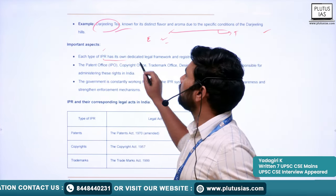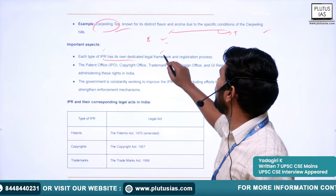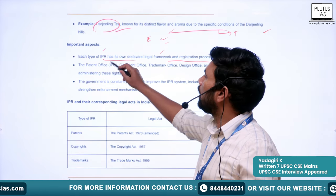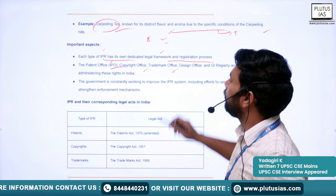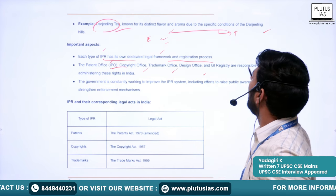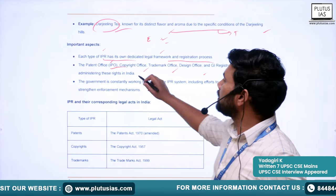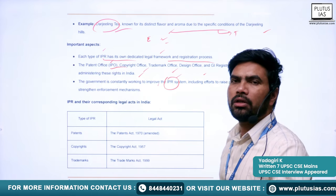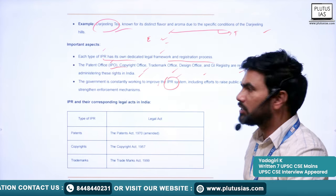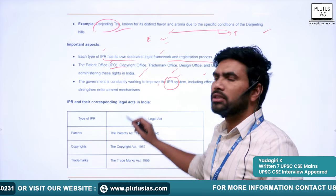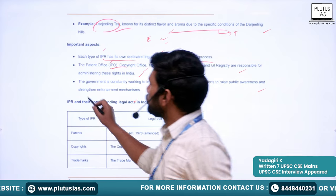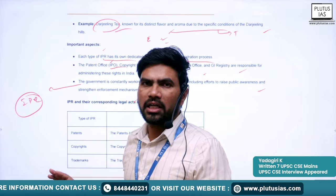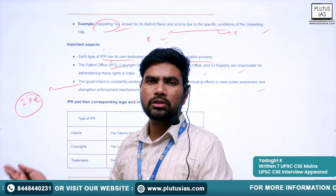Each type of IPR has its own dedicated legal framework and registration process. The patent office, copyrights office, trademarks office, designs office, and GI registry are all responsible for administering these rights in India. The government is continuously working to improve the IPR administration system, including efforts to raise public awareness and strengthen enforcement mechanisms. When IPR is protected it has many advantages, but there are also certain disadvantages we will explore.